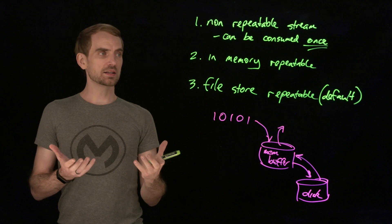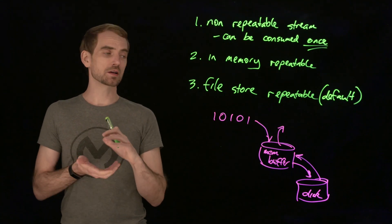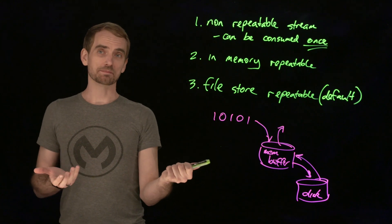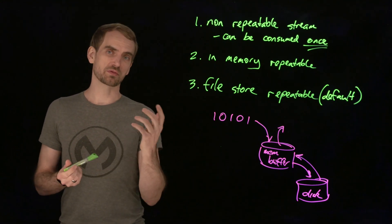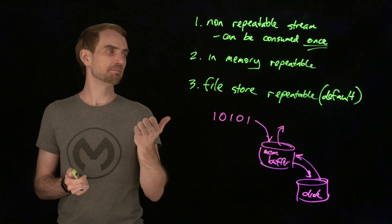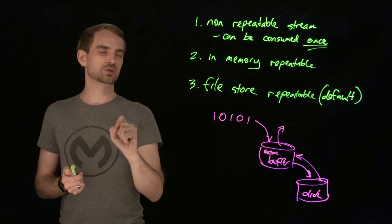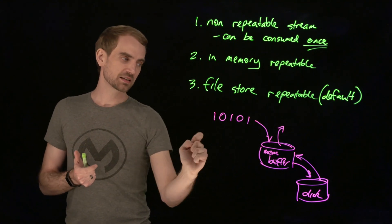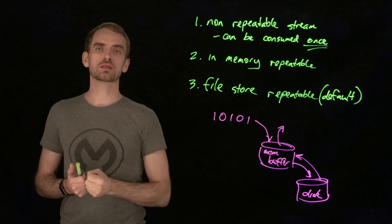Now it's a good way to put a cap on how much memory you're going to allocate, but if you exceed that, then you've got no other option. And that brings us into point three, which is actually the default on the Mule runtime. So the file store repeatable stream allows you to use a disk-based buffer in addition to the in-memory buffer.